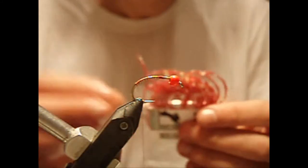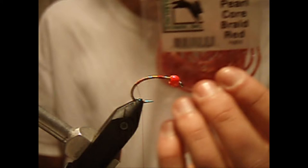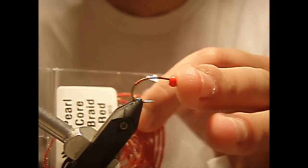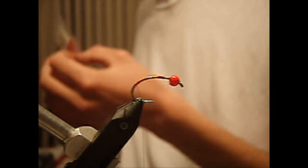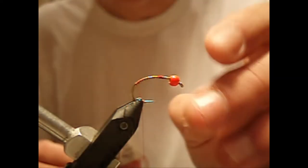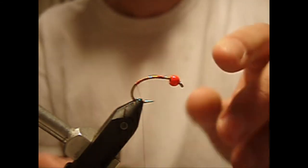Right about there. For our worm section, we're going to be using Pearl Core Braid in red. Before I get too far, this is tied on a scud hook, specifically a Tiemco 2457 in size 8. The bead I'm using is a Spirit River orange hot bead in 5/32.